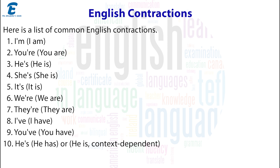Here is a list of common English contractions. 1. I'm = I am. 2. You're = you are. 3. He's = he is. 4. She's = she is. 5. It's = it is. 6. We're = we are. 7. They're = they are. 8. I've = I have.